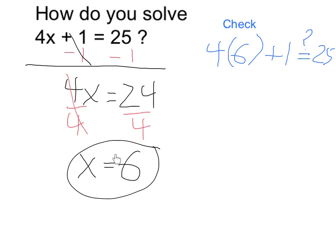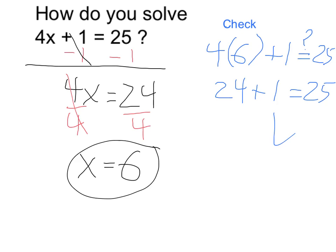Let me just check it briefly by taking the 6 and plugging it into the original equation and seeing if it is, in fact, equal to 25. 4 times 6 is 24, and yes, 24 plus 1 is equal to 25. So it does check out, and I have my answer. Remember, I want to do things in the reverse order, so I started by subtracting 1 from both sides.